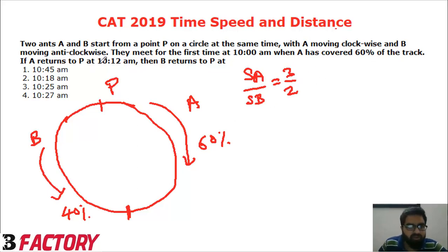We are given that A returns to P at 10:12. A is covering 40% of distance and he is covering in 12 minutes.